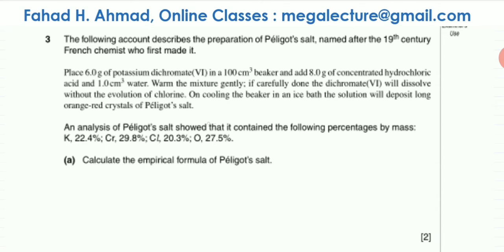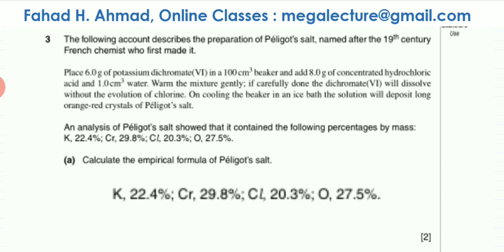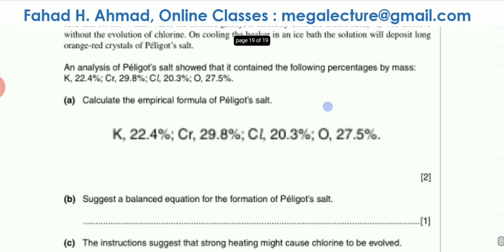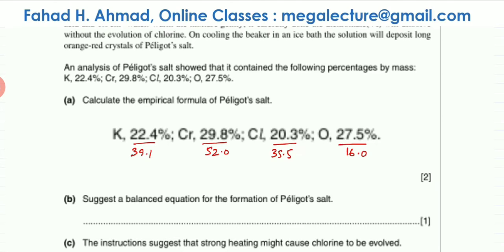An analysis of Péligot's salt showed that it contained the following percentages by mass. Given the percentages of all the elements in Péligot's salt, we are asked to calculate the empirical formula. I've copied the percentages and I'm going to figure out the empirical formula. The first step is to divide the percentage mass by the ARs (atomic relative masses).